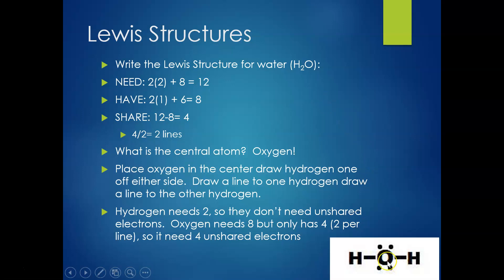The correct answer has oxygen in the center with a hydrogen off to either side, one line going to each. Each line represents two electrons, so each hydrogen has two — which is what hydrogen wants. Oxygen has four electrons from the two lines, but it needed eight, so we add four more unshared electrons — two lone pairs — to give it eight. That's all there is to it, and the more you practice the easier it's going to get.